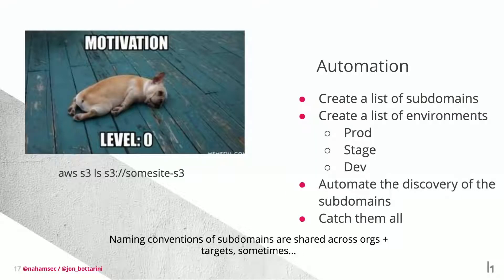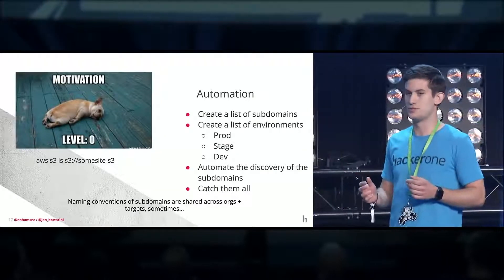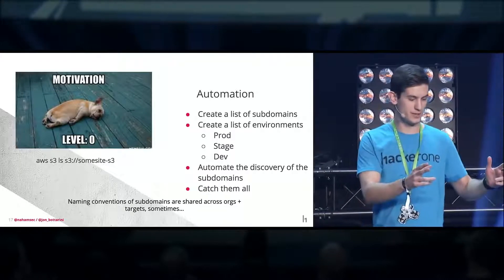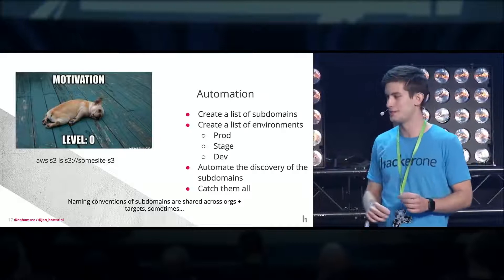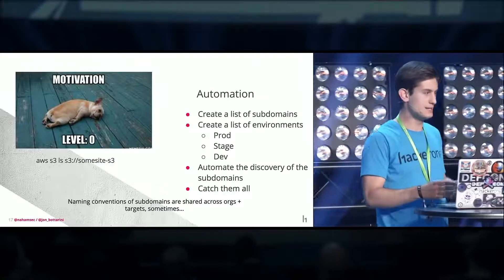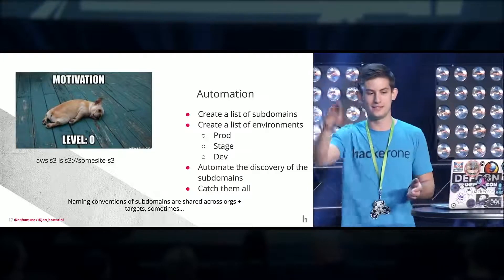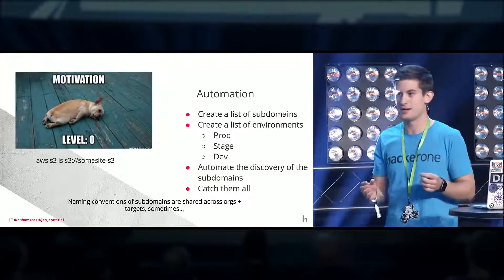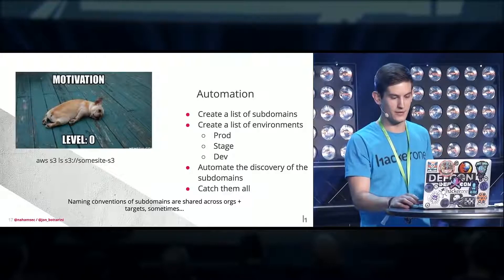I'm an extremely lazy person and I don't want to type into Google every time I have a new target. The first thing you can do is reuse past findings. Developers will have a staging environment, a production environment, and maybe a marketing environment. These enumeration patterns are used across all different organizations — it might work for Uber, HackerOne, Yahoo, all different bug bounty programs. I put them in a text editor like Sublime Text, build a whole list, and sometimes this list can get really big — hundreds of thousands of possible enumerations. Then I use tools to enumerate through every single one. The goal, of course, is to catch them all.